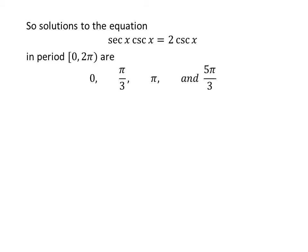The solutions of the equation secant of x times cosecant of x is equal to 2 times cosecant of x in the interval 0 to 2 times pi are: 0, pi upon 3, pi, and 5 times pi upon 3.